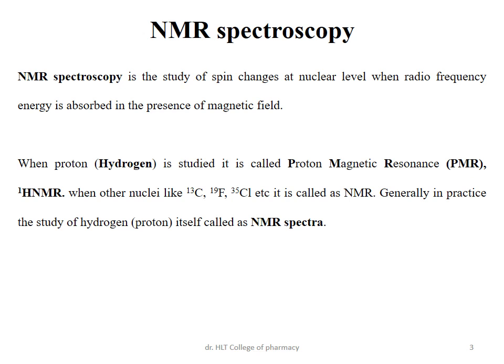NMR spectroscopy is also called proton magnetic resonance since hydrogen (proton) is studied, referred to as 1H NMR. Other nuclei studied include carbon-13 (C13 NMR), fluorine-19 (F19 NMR), and chlorine-35 (Cl35 NMR). Generally, however, hydrogen or proton spectroscopy itself is commonly referred to as NMR spectroscopy.